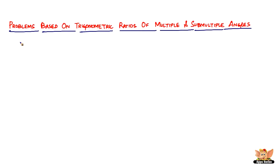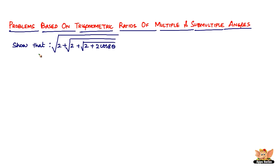In this video, let us continue to solve problems based on trigonometric ratios of multiple and submultiple angles. Here we have a problem which says to show that √(2 + √(2 + √(2 + 2cos8θ))) = 2cosθ. That's what we have to prove.